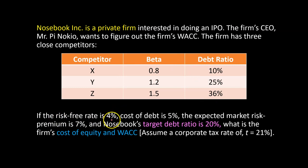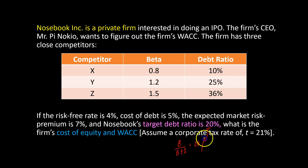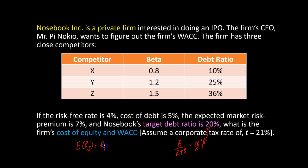Furthermore, the risk-free rate is 4%, Nosebook's cost of debt is 5%, the expected market risk premium is 7%, and Nosebook's target debt ratio is 20%. The questions are: what is the firm's cost of equity and what is its weighted average cost of capital?